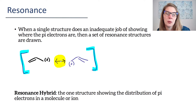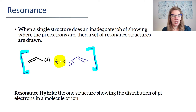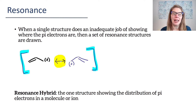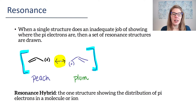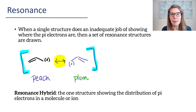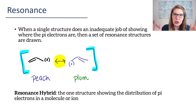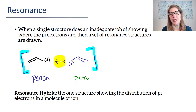In the Klein textbook — and David Klein's textbook is my favorite — what he says is think about a nectarine. What is a nectarine? A nectarine is essentially a mixture of a peach and a plum. Let's imagine that our left-hand side structure is a peach and this one is the plum. For resonance, neither the peach nor the plum exists. The nectarine is its own separate thing — it's a mixture of components from the peach and the plum that have combined and now it's its own entity. That's what the resonance hybrid is.